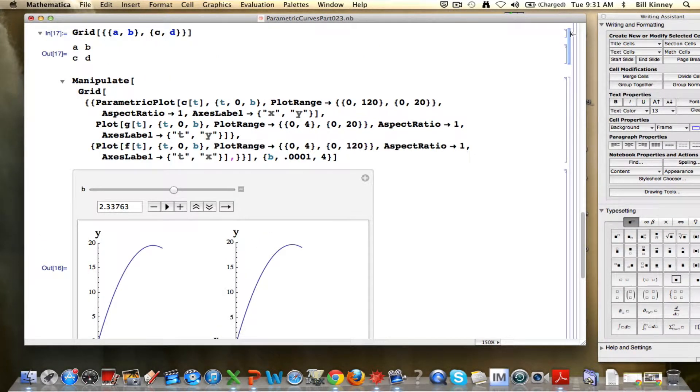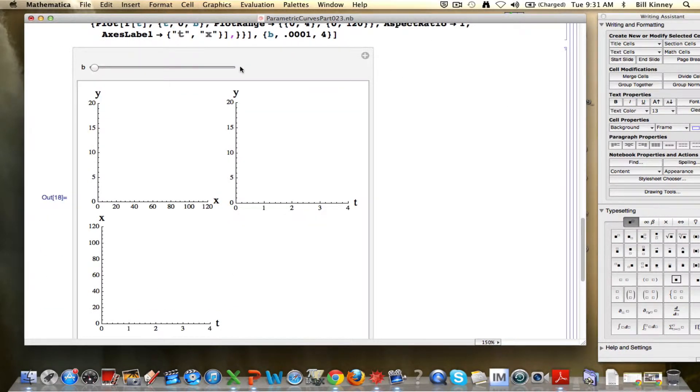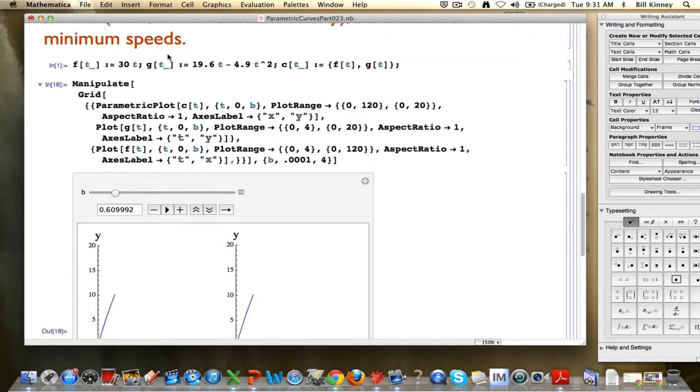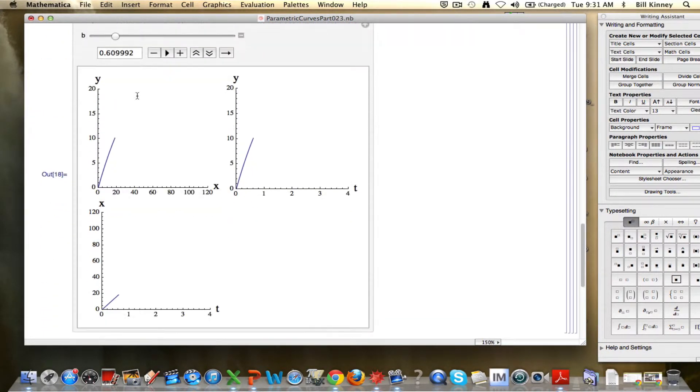Now you see three graphs. The one on the bottom there, that's the x-coordinate as a function of time. That's a linear function, which we already knew. It's the graph of x equals 30t. Linear function with a slope, a rate of change of 30. That's what this straight line is. And it's keeping track of the x-coordinate as a function of time.